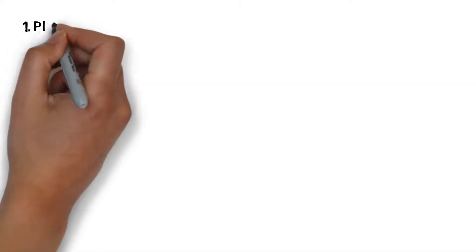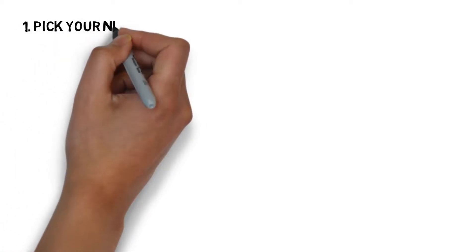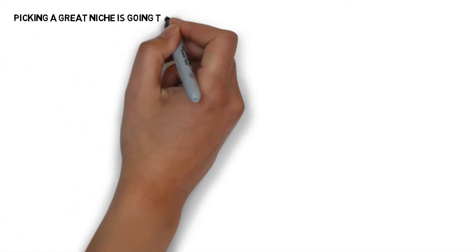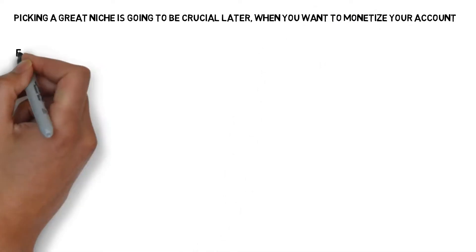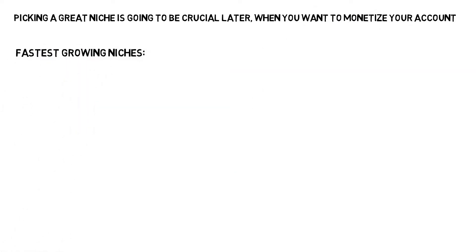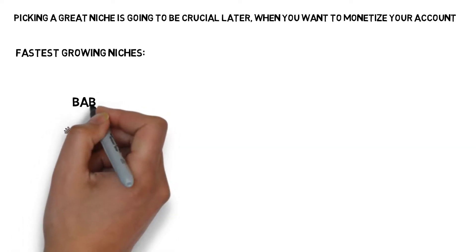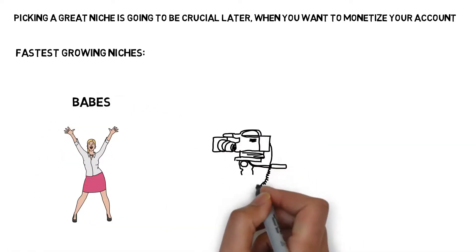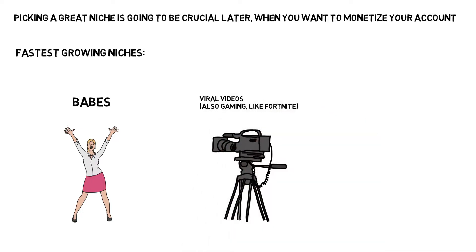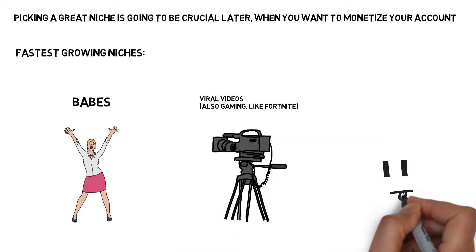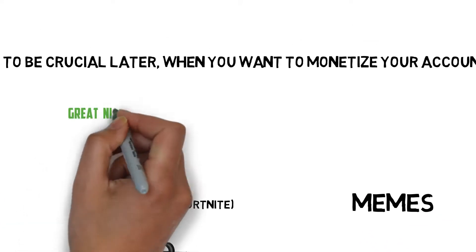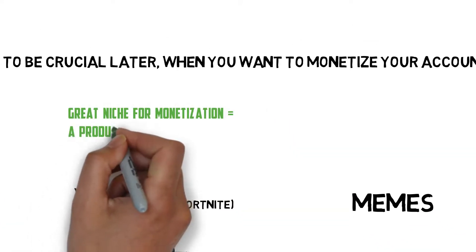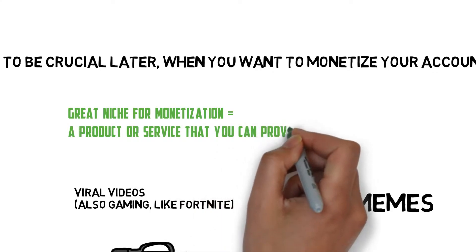The first step before you start doing anything: you must pick your niche. Most of you are probably familiar with this already, but trust me, picking a great niche is going to be crucial when you want to monetize your account. The fastest growing niches in 2019 are the babes niche, viral videos including gaming like Fortnite, and memes — but be careful as they may not be the easiest to monetize. Great niches for monetization are any where you can provide a product or service to your followers.